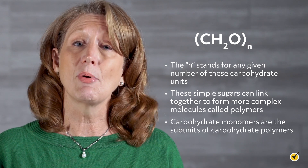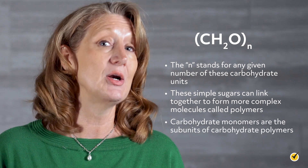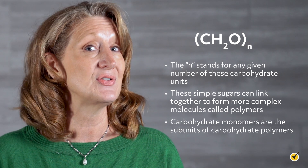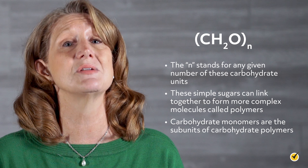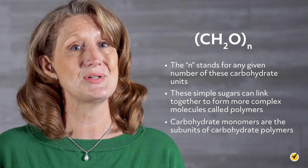These simple sugars can link together to form more complex molecules called polymers. So carbohydrate monomers are the subunits of carbohydrate polymers. We can have simple sugars of just one monomer, or more complex sugars with lots of monomers all bonded together. This means they vary in structure and are therefore really diverse.